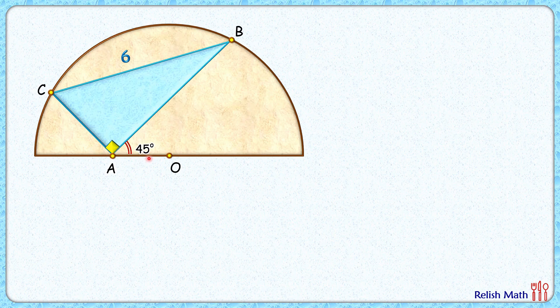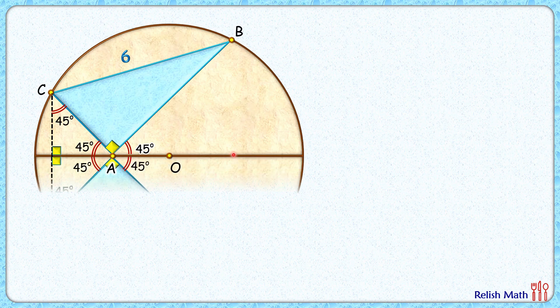Here this angle is 45 degrees, this is 90, and thus this remaining angle will be 45 degrees. Now from point C let's drop a perpendicular on the diameter and this remaining angle by angle sum property will be 45 degrees. Now let's make a mirror image of this semicircle down below.